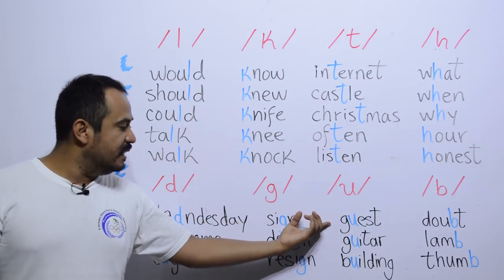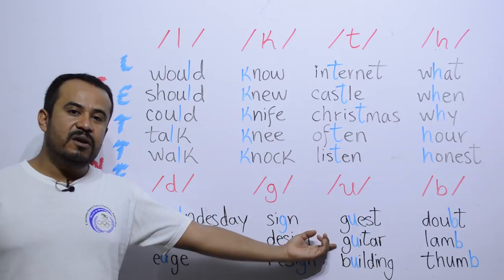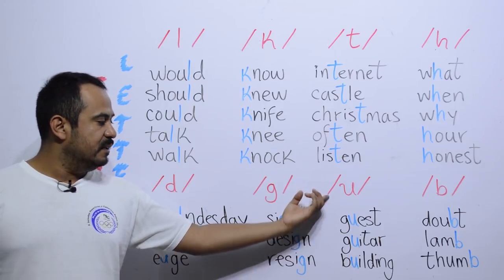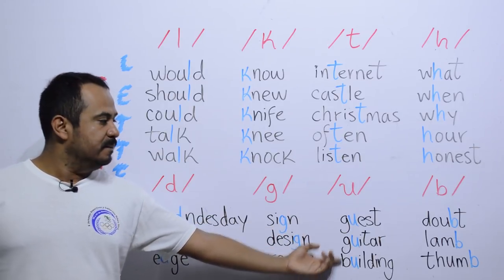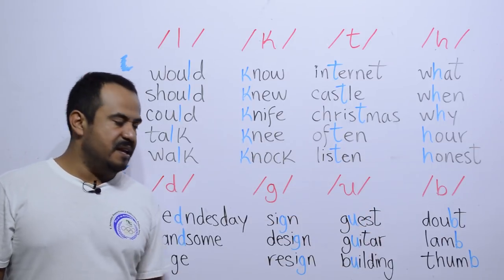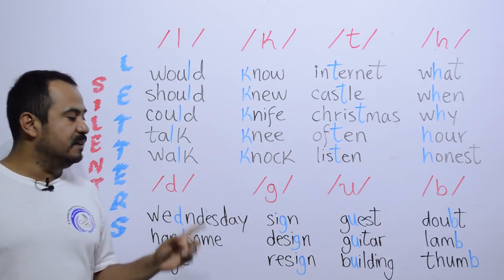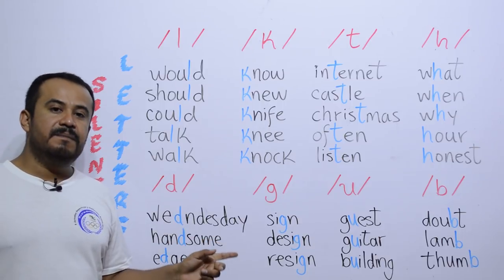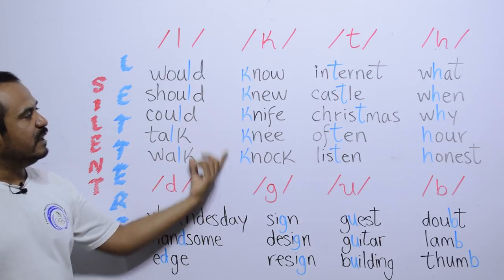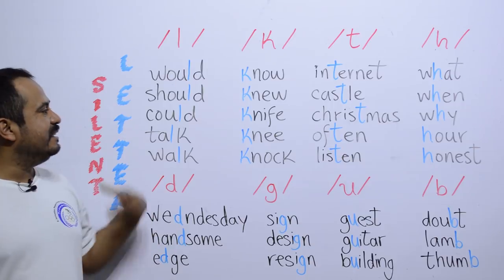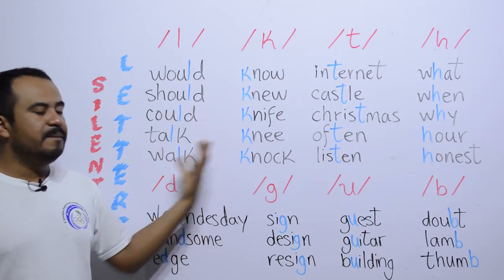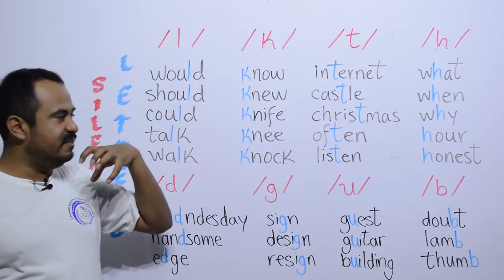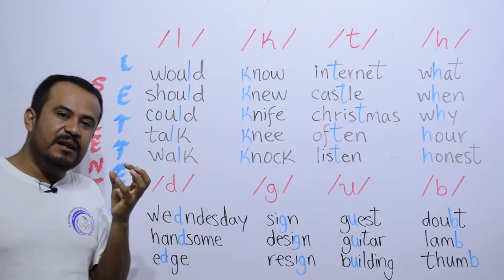Con la letra G silenciosa: sign, design, resign. Con la letra U silenciosa: guest, guitar, building. Y con la letra B silenciosa: doubt, lamb, thumb.